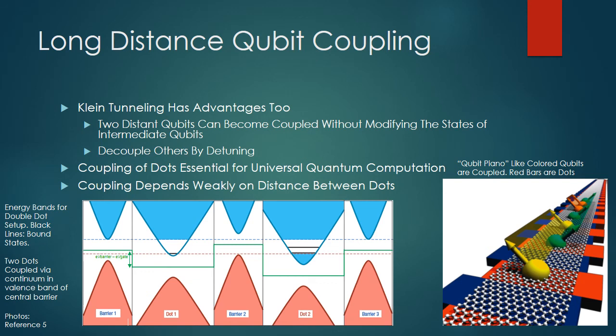The other picture shows the energy bands for a double dot setup. A single bound state, represented by a straight black line, is shown in the conduction band of the left dot, and two bound states are shown in the conduction band of the right dot. The two dots are coupled via the continuum of states in the valence band of the central barrier, which are allowed transitions in graphene because of Klein tunneling.